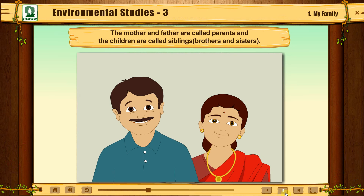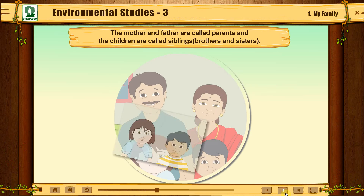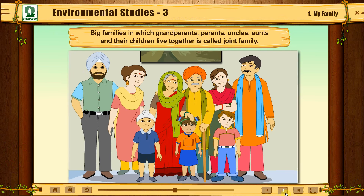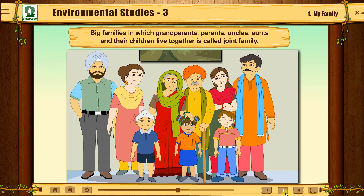The mother and father are called parents and the children are called siblings — brothers and sisters. Big families in which grandparents, parents, uncles, aunts and their children live together is called a joint family.